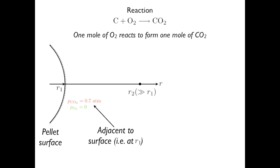At a point far away from the surface, R2, we assume the CO2 concentration is zero, and hence the partial pressure of oxygen equals the total pressure of 0.7 atm.